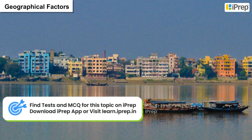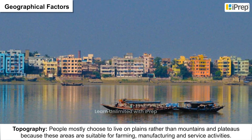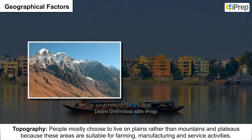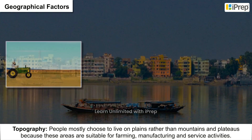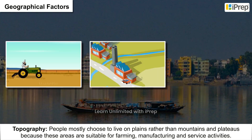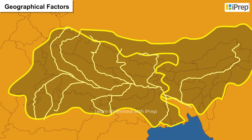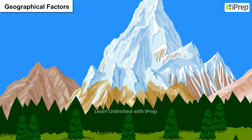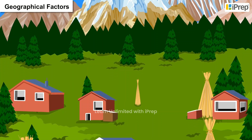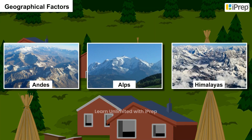Geographical Factors — Topography: People mostly choose to live on plains rather than mountains and plateaus because these areas are suitable for farming, manufacturing and service activities. Example: The most densely populated areas of the world are the Ganga Plains. Sparsely populated areas are mountains like the Andes, Alps and Himalayas.